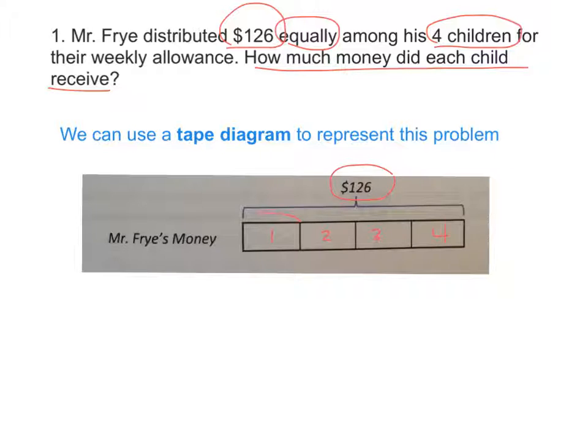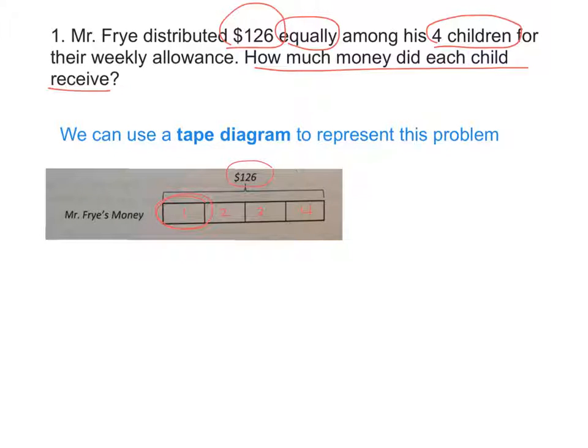How can I find out how much one child gets? What do I need to do? I need to use division. Now, is this a sharing division problem or a grouping division problem? Sharing, because we're sharing the money equally amongst four groups. What number is my dividend? Which number needs to live inside the house? The $126. And knocking on the door is the divisor. What number is the divisor? Four.